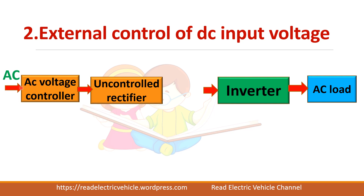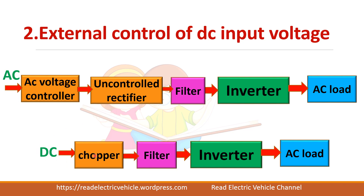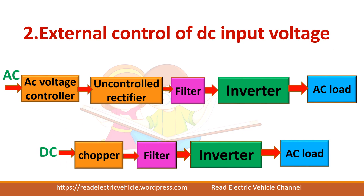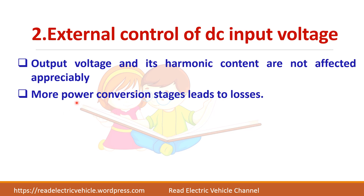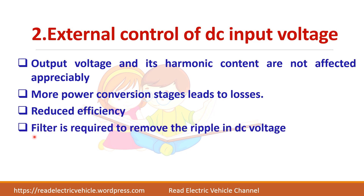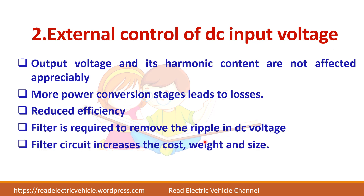You can also use an AC voltage controller with an uncontrolled rectifier, or if you have a DC input you can connect it to a chopper directly. However, the problem with this method is that more power conversion stages are used, which leads to more losses and reduced efficiency. A filter stage is needed to remove ripple in the DC voltage, which increases the size, cost, and weight of the circuit, and because of the filter and so many power components the response will be very slow.